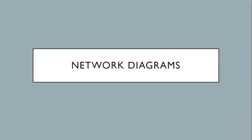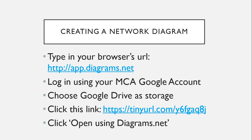Let us first create network diagrams. Before we move on to the physical stuff, let's start with diagrams so we can understand how devices are connected to each other. We will be using an online app for this. Use your browser in incognito mode — if you're using Chrome, switch to incognito mode; if using Edge, it's private mode — so there's no problem when logging in using your MCA Google account, since otherwise it might automatically use your personal Gmail account.